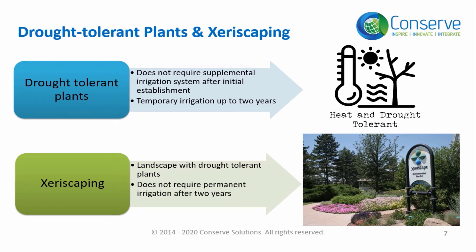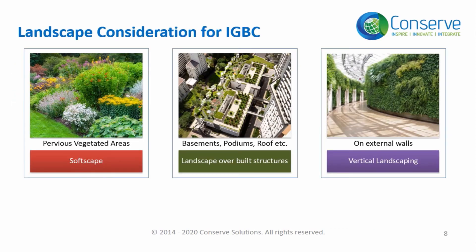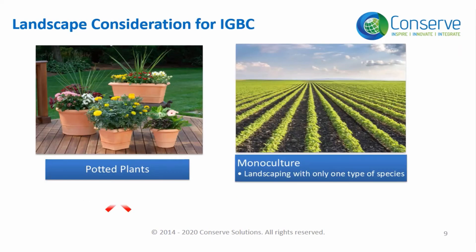For the purpose of the IGBC rating system, landscape includes soft scaping — that is pervious vegetated area — as well as landscape built on basements, roofs, and vertical landscaping on external walls. Potted plants are not considered as landscape.